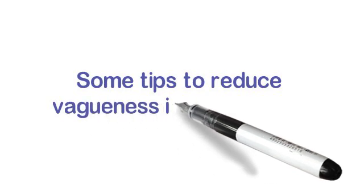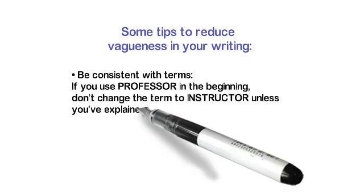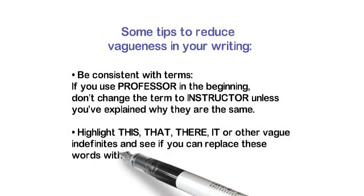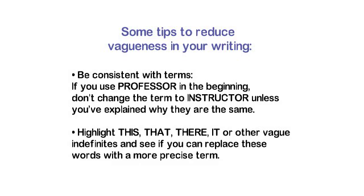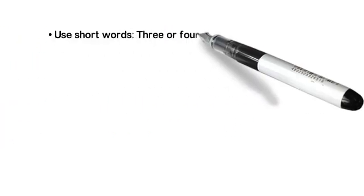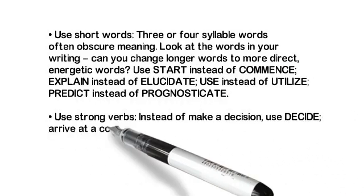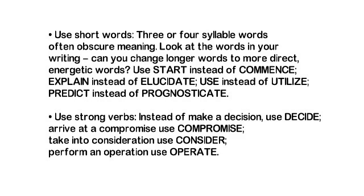Here are some tips to reduce vagueness in your writing. First, be consistent with your terms — use specific terms and then be consistent with them. Don't use 'professor' and then change it to 'instructor' unless you've argued they are the same. Highlight vague words like 'this,' 'that,' 'it,' and other vague indefinites and see if you can replace them with something more concrete. Use short words — three or four syllables often obscure meaning. Can you change longer words to more direct, energetic ones? Use 'start' instead of 'commence,' 'explain' instead of 'elucidate,' 'use' instead of 'utilize,' 'predict' instead of 'prognosticate.'